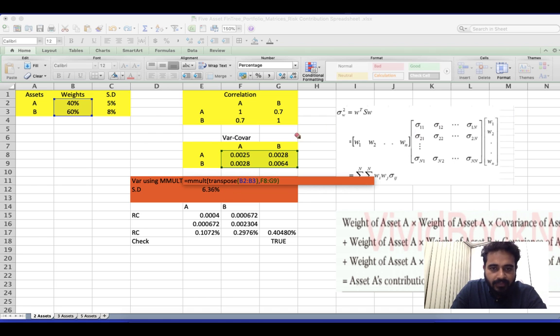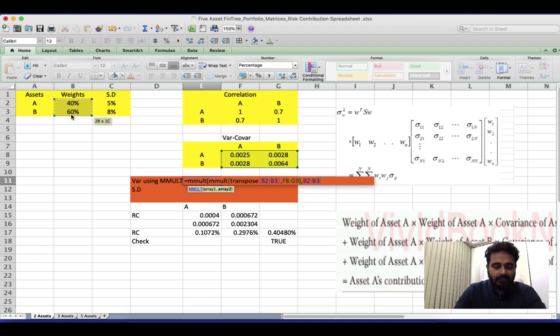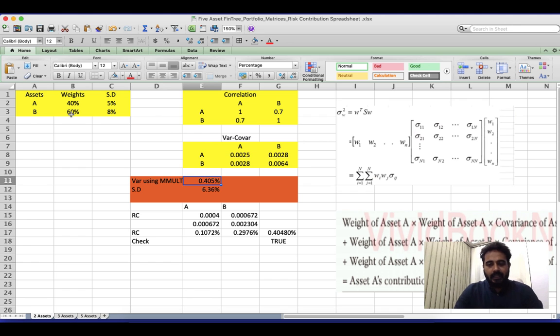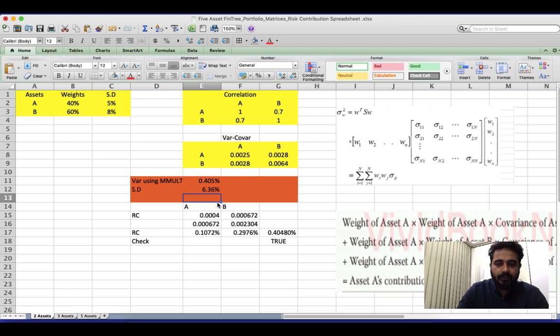So this part is multiplied. We've multiplied the transpose of the weights and we've multiplied the variance covariance. Now what I'm going to do is I'm going to add another MMULT here at the beginning because we want to add in the third one. So this now becomes one term and then comma and then select this, but this time in a column vector directly and then bracket close. Now it seems like an okay formula. The only thing we have to be careful with now is when you press enter, you don't press enter directly. You press control plus shift plus enter together.